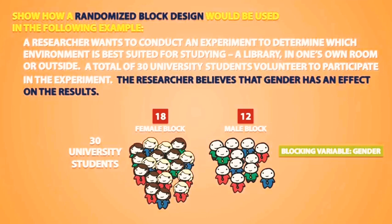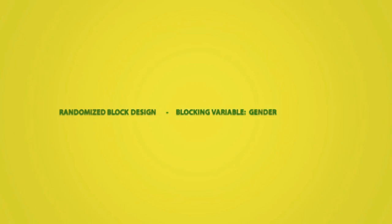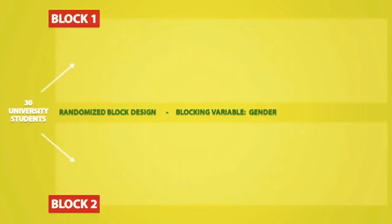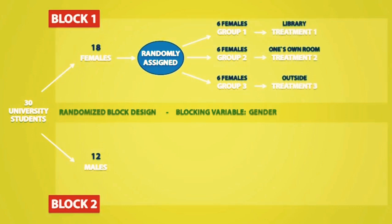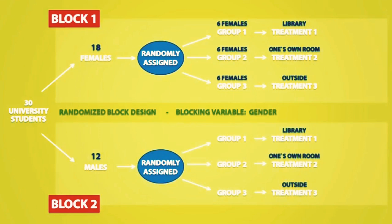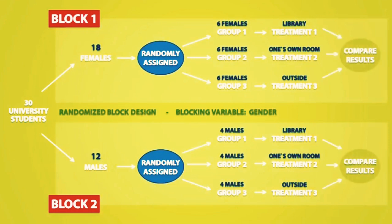Let's make a diagram. We are looking at a randomized block design where gender is the blocking variable. We started with 30 university students, separated into two blocks — 18 females and 12 males. The females are randomly assigned to three groups of six, each receiving a different treatment. The males are similarly assigned, with four males in each group. At the end of the experiment, we compare the results within each block.